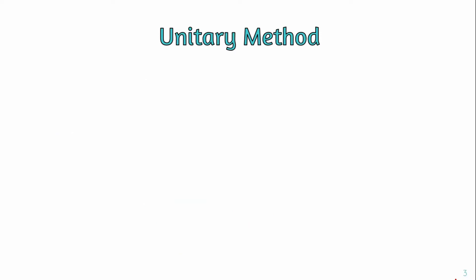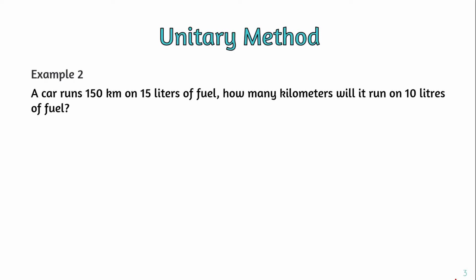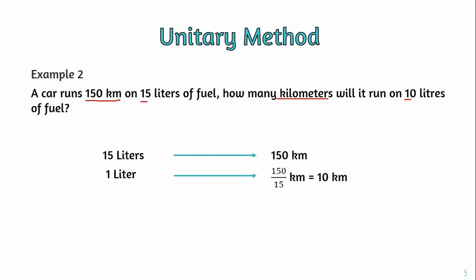Moving on to example two: a car runs 150 kilometers on 50 liters of fuel. How many kilometers will it run on 10 liters of fuel? So for 1 liter, the car runs 150 divided by 50, which gives 3 kilometers. Then for 10 liters, 10 into 3 equals 30 kilometers. So the answer is 30 kilometers.